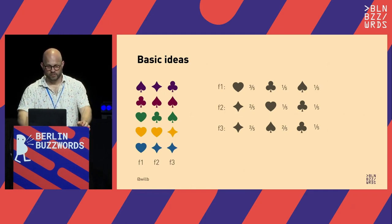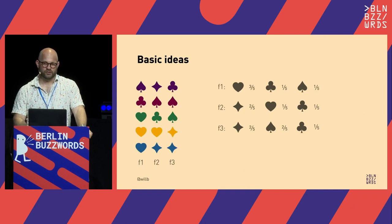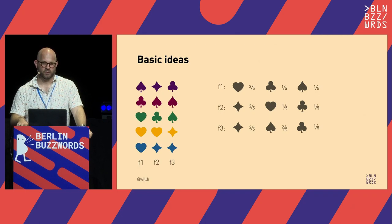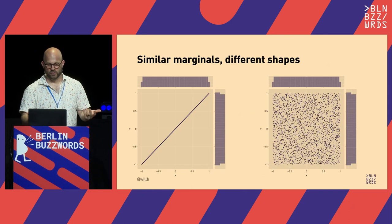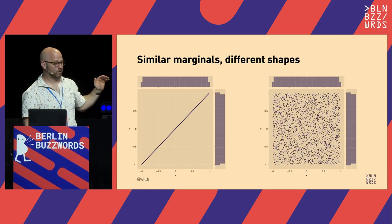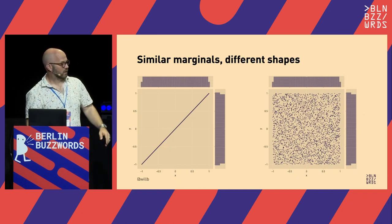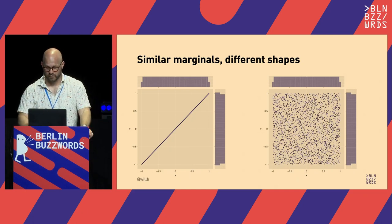If we're looking at continuously valued features, we'll want to think about cumulative or marginal distributions more generally, but we run into a very similar problem as with the Datasaurus — if our data exhibit correlations, we're not going to get a dataset that looks a lot like our data just by sampling from the marginals. Here are two examples where we have the same marginal distributions but wildly different shapes: a perfect positive correlation on one side, and uniform random values on the other.